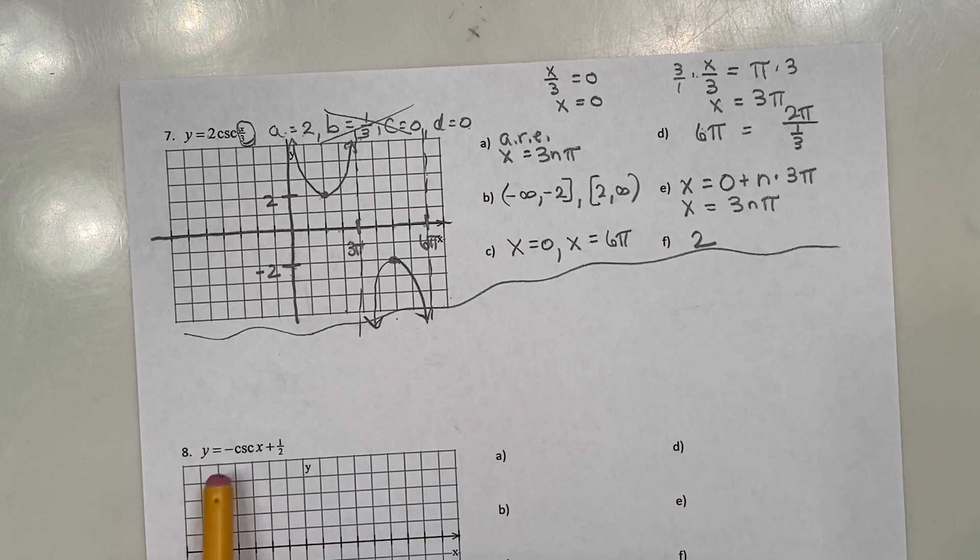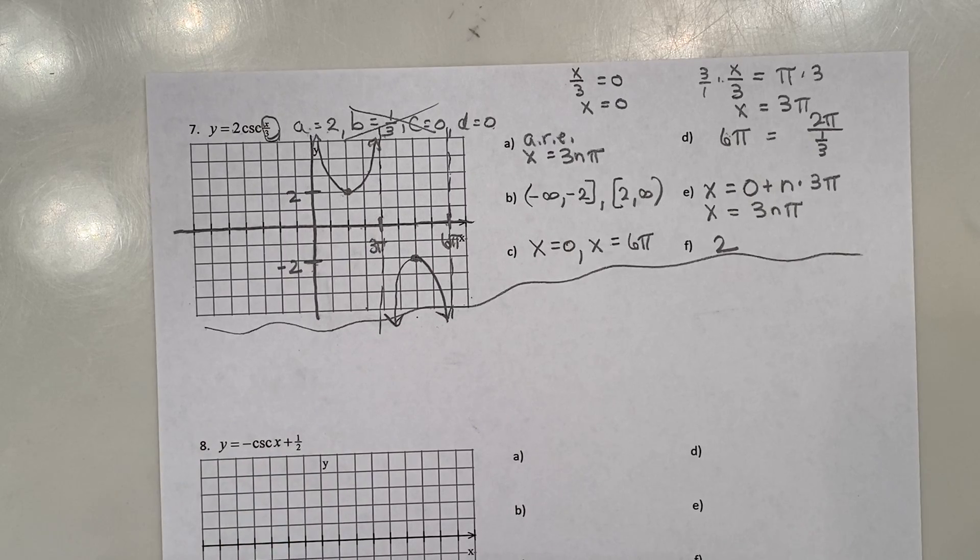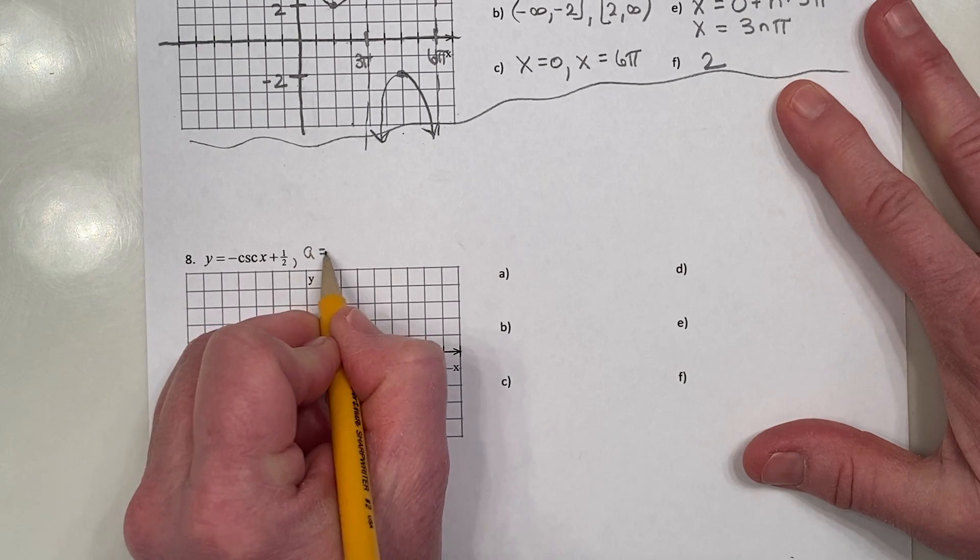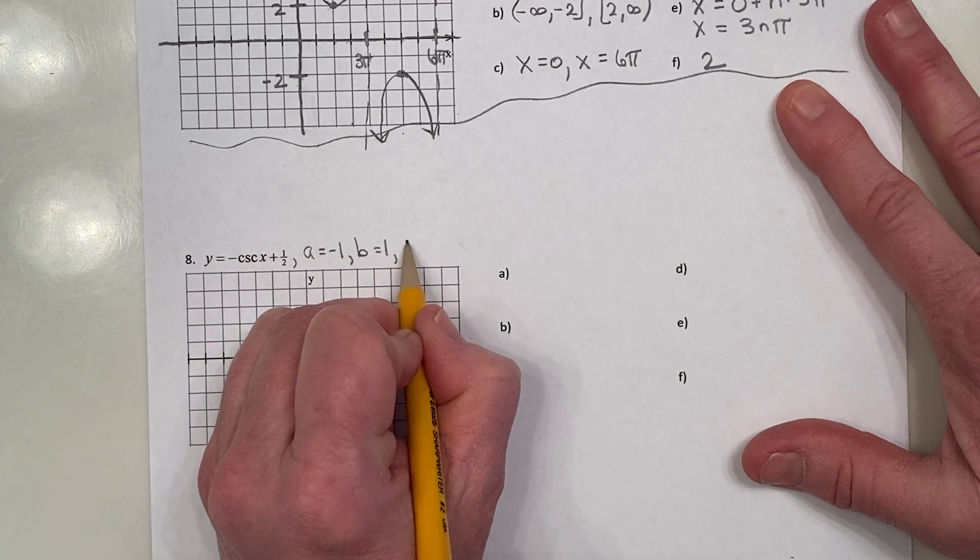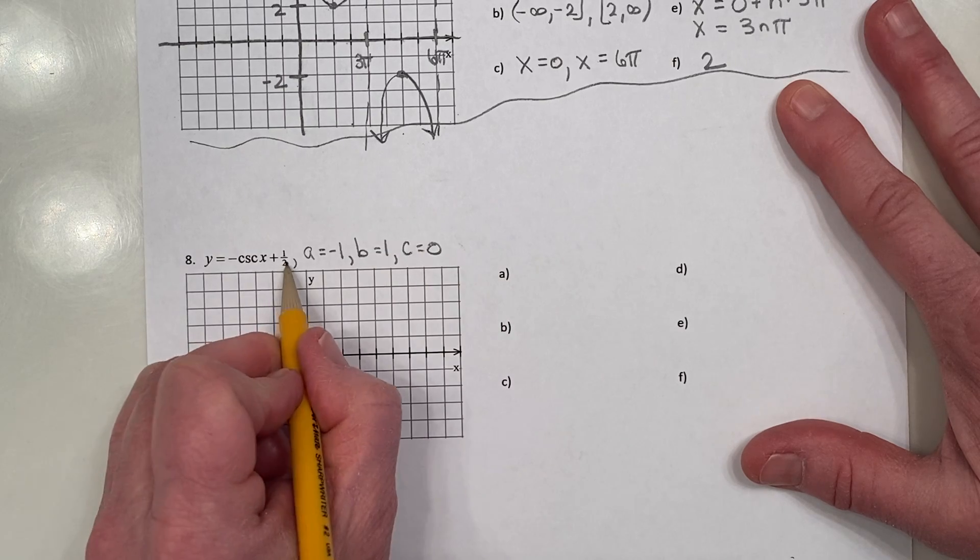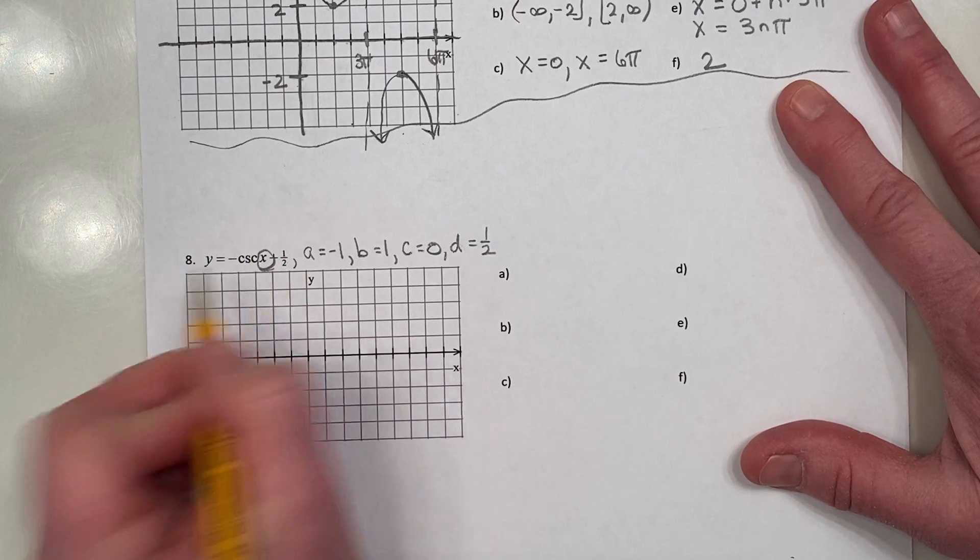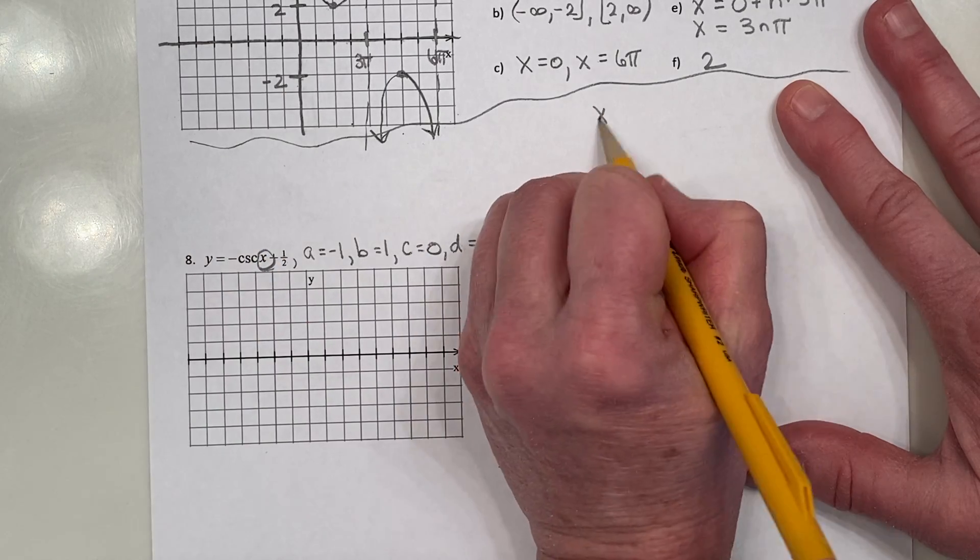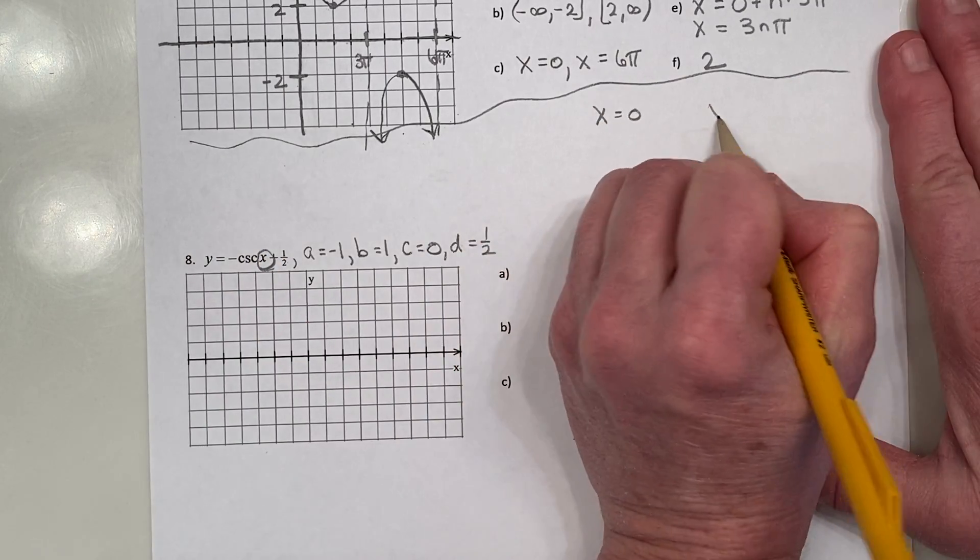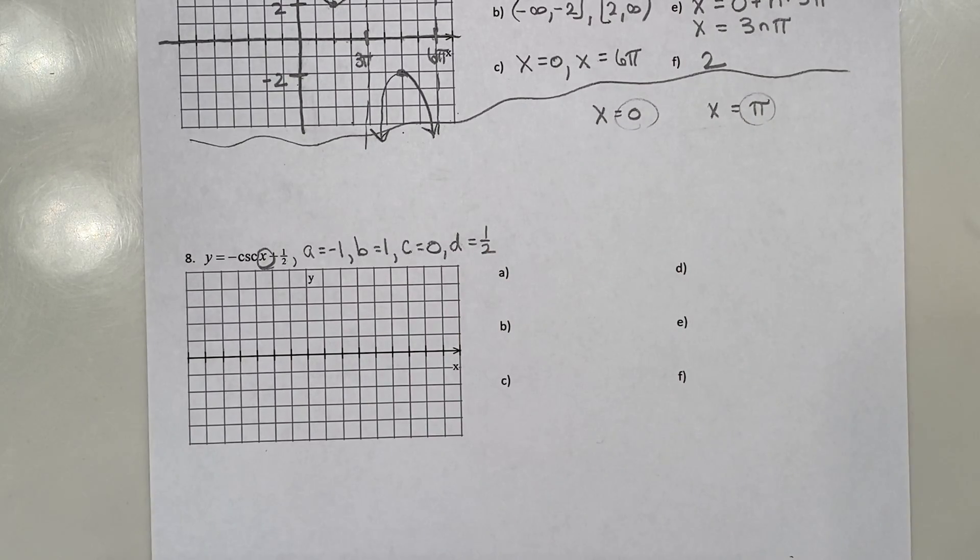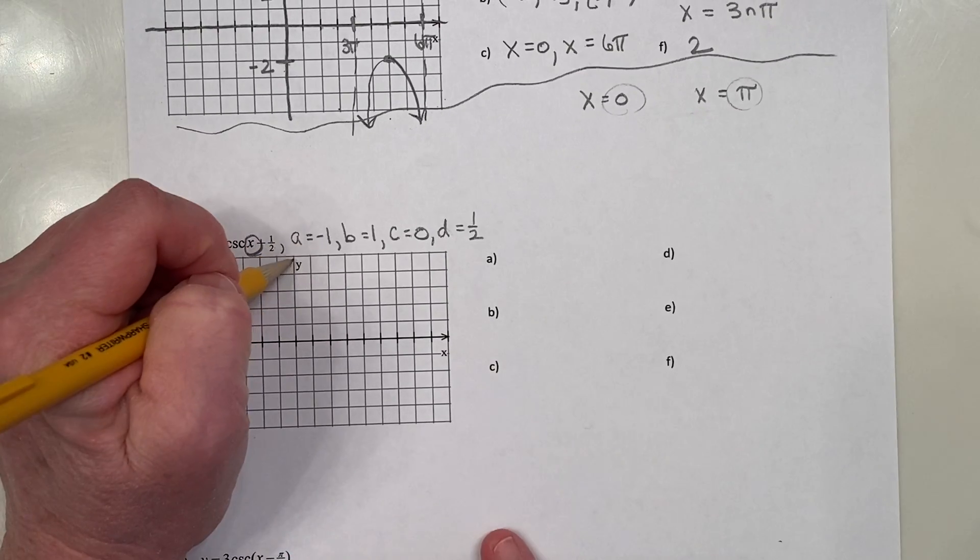Looks like we're going to reflect the cosecant graph and then shift it all up by a half unit. That half is your D value. So take Bx minus C. That's easy. Nothing changed. Always set for cosecant equal to 0 and π. Well, that's nice. We'll jump down here.